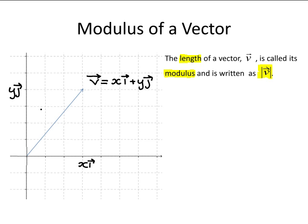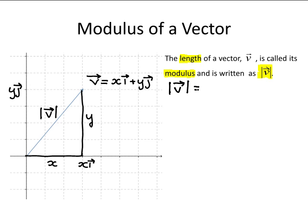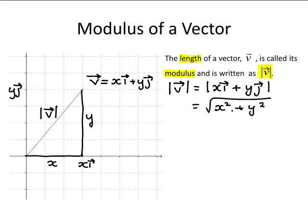The modulus of vector v, written like this, is the length of this vector, which is the length of this blue line — the length from the origin, the point (0,0), over to here. This length is x and this length is y. The modulus of vector v is equal to the square root of x squared plus y squared. This is found using Pythagoras, as this triangle here is a right-angled triangle.